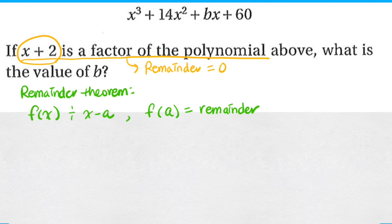Now if x minus a and x plus 2 are equal, that means that a should be equal to negative 2.